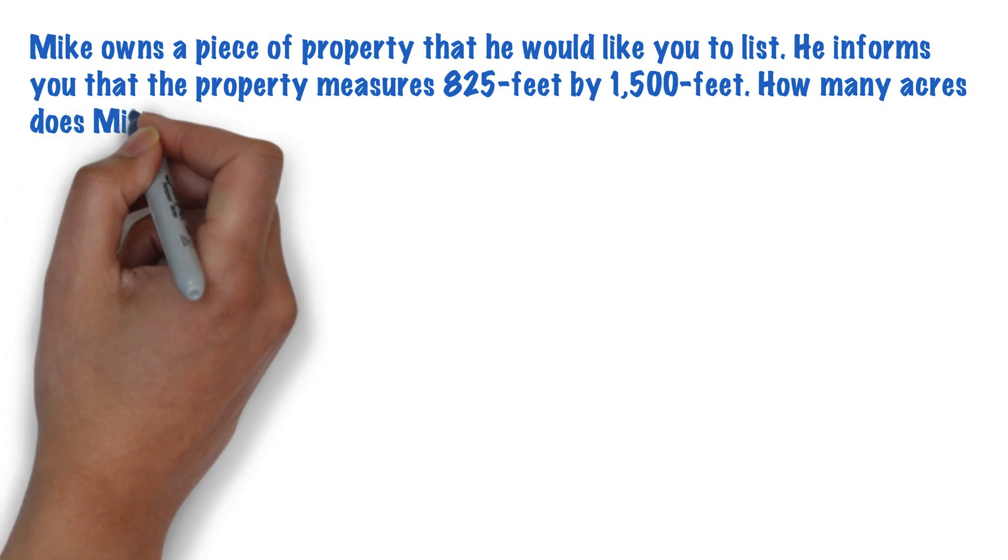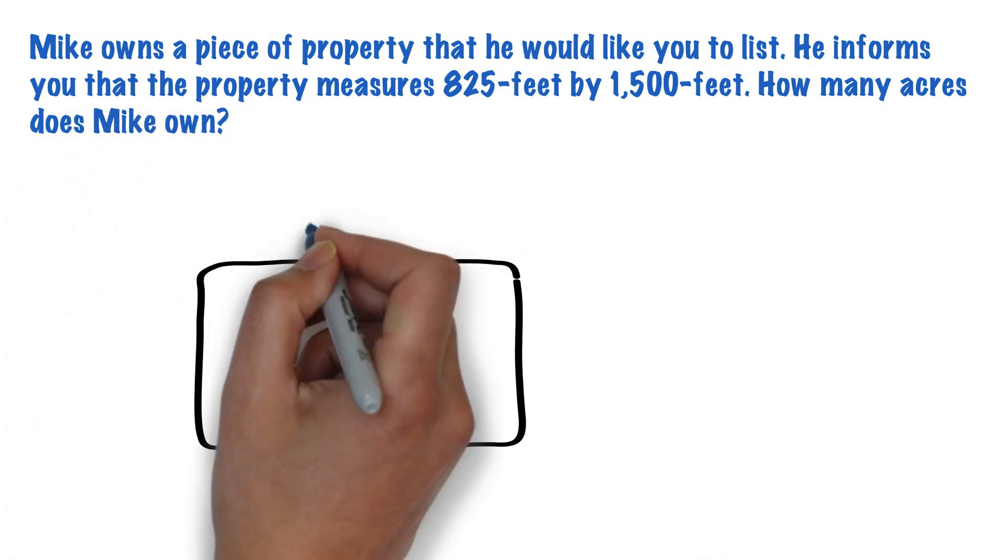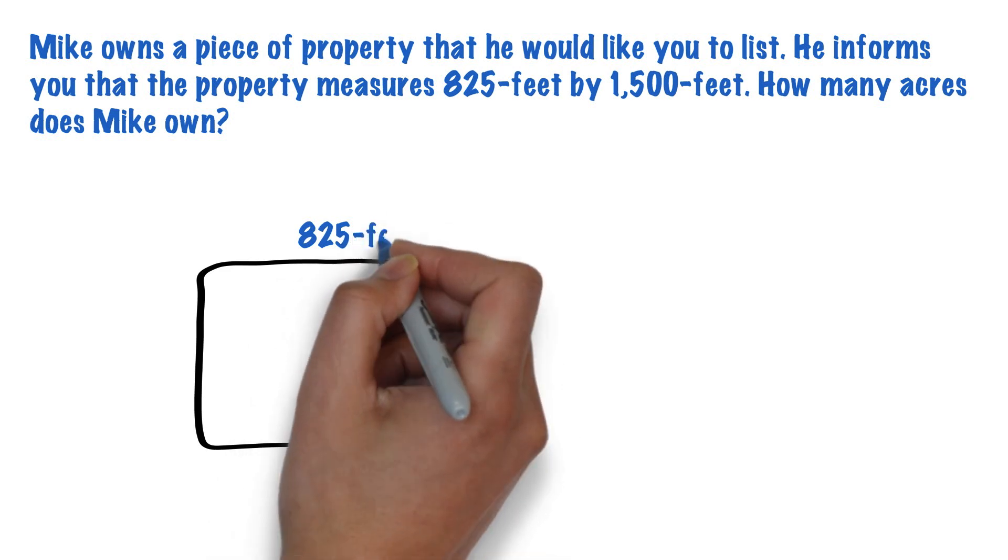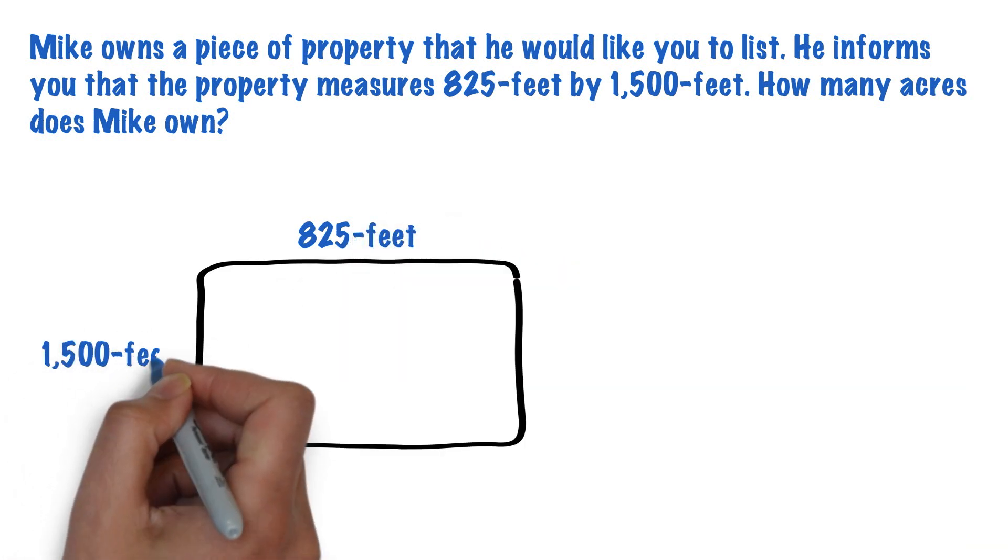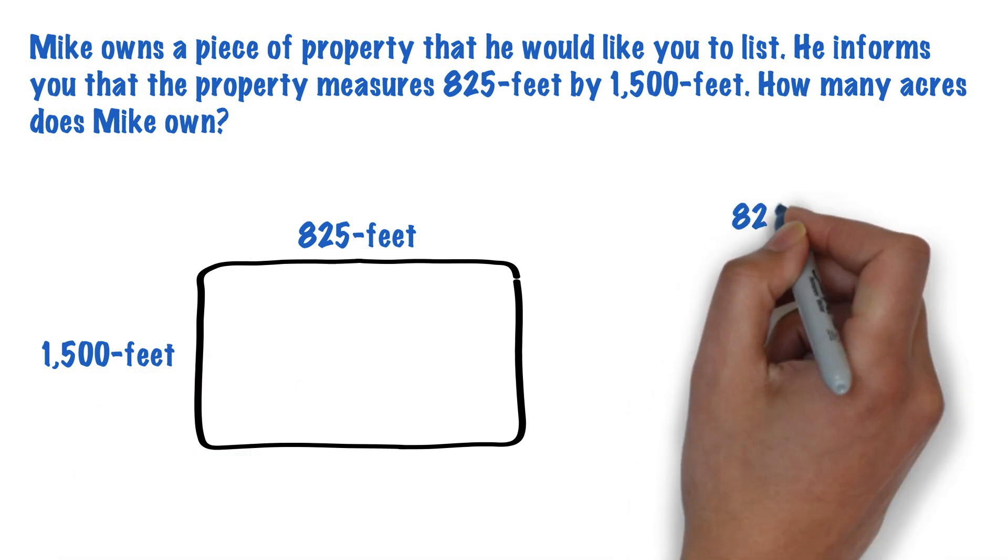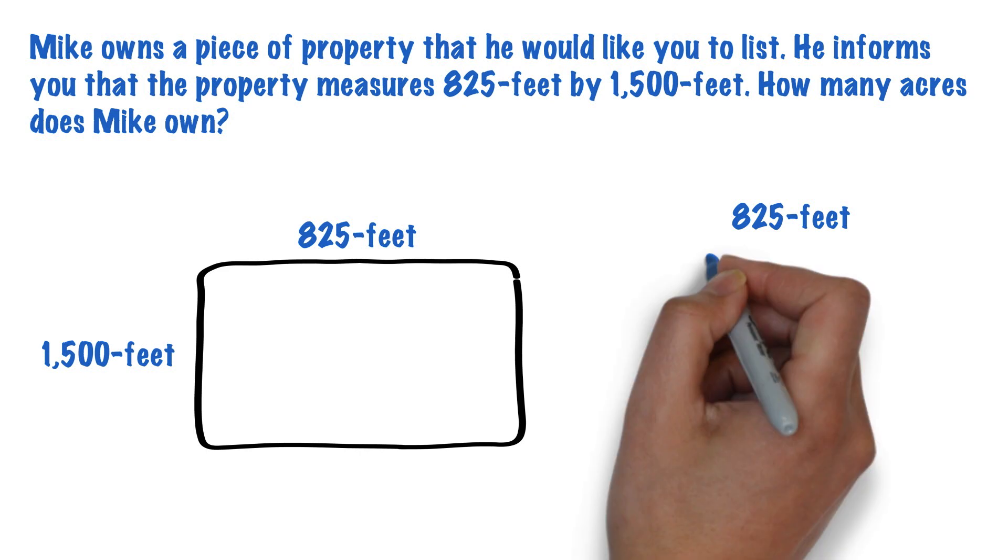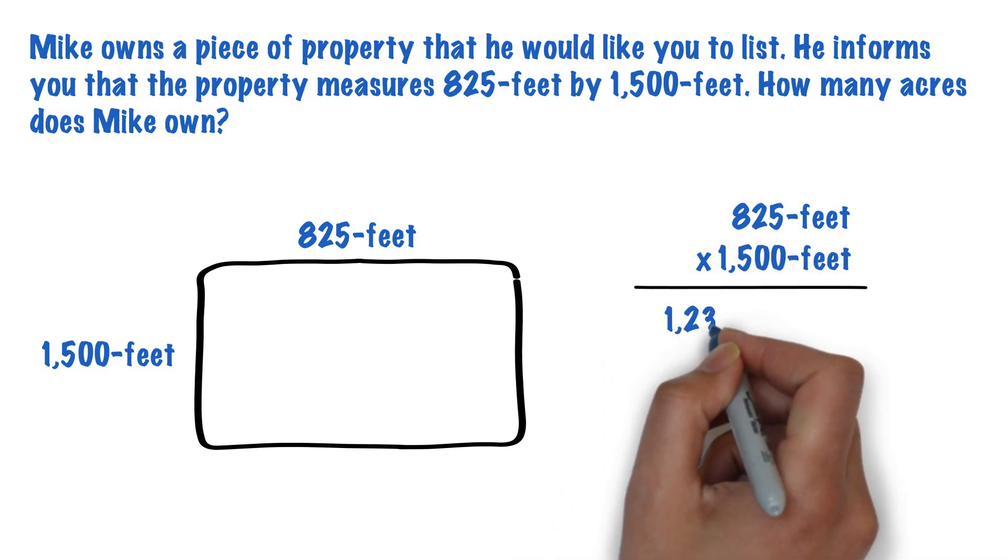Our first step is to find out how many square feet the parcel is. We know that the parcel measures 825 feet along one side and 1,500 feet down the other side. To determine the square feet, we simply multiply the two numbers: 825 times 1,500, which equals 1,237,500 square feet.